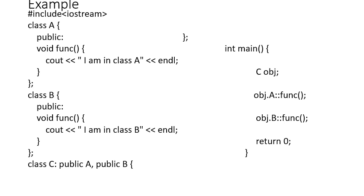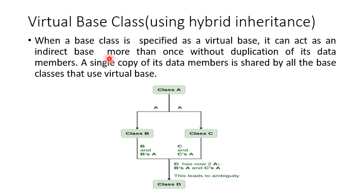Next, virtual base class using hybrid inheritance. When a base class is specified as a virtual base, it can act as an indirect base more than once without duplication. A single copy of its data members is shared by all the base classes that use virtual base.